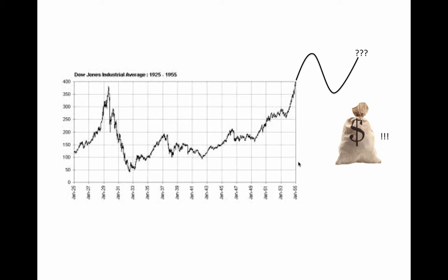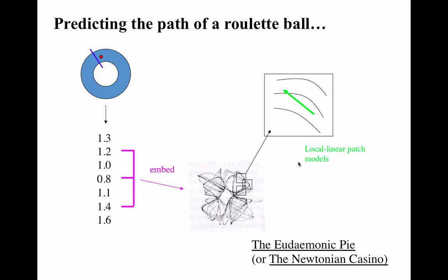This was the work of the Chaos Cabal at the University of California at Santa Cruz, which included a lot of names that you know: Jim Crutchfield, who was the author of the seminal work on delay coordinate embedding; Doan Farmer, whose noise reduction scheme we talked about, the one with the stable and unstable manifolds squeezing the noise balls. What they wanted to do was predict where a ball on a roulette wheel would go. If you could do this effectively, you'd be rich — if you didn't get tossed out of the casino first.